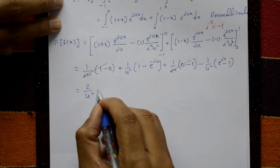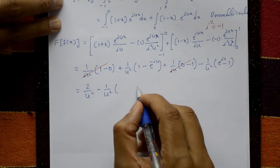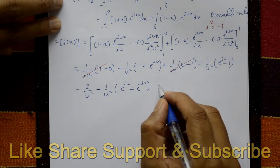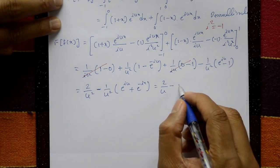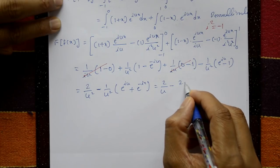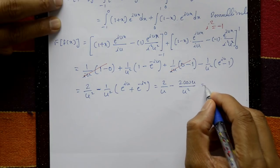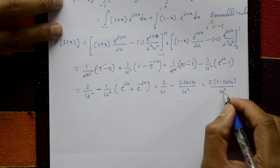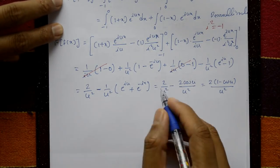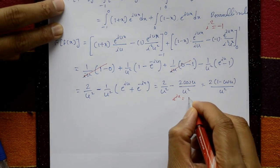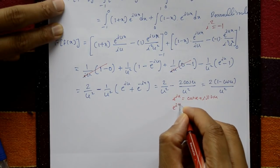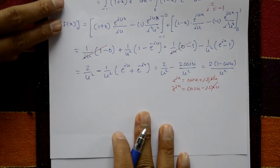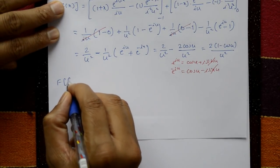With minus 1/u² outside, the bracket contains e raised to i·u plus e raised to minus i·u, giving 2 times cos u. So we get 2/u² minus 2·cos u/u², which equals 2(1 minus cos u)/u². Using Euler's formula: e raised to i·u = cos u + i·sin u and e raised to minus i·u = cos u minus i·sin u; adding them gives 2·cos u.